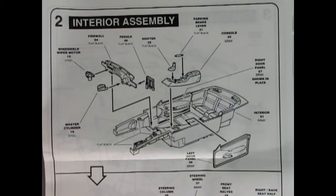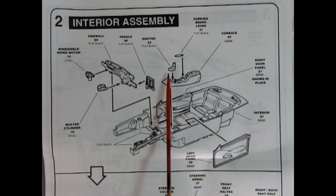Now panel two jumps right into the interior. Take a look at this. We got our inner fender wells molded in place and then the interior bucket and separate side door panels, separate console, separate parking brake lever, a gear shift lever and then we've got our pedals here for the standard transmission car, a firewall, master cylinder and the windshield wiper motor.